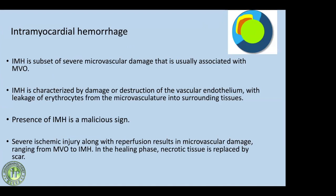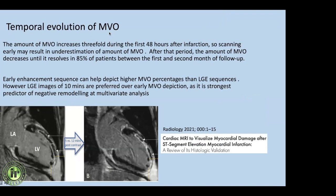The presence of IMH is a malicious sign — it leads to severe ischemic injury not only in the acute setting but even in the healing phase, where necrotic tissue is replaced by a larger scar with poor outcome. Simple MVO will reduce in size over time. When differentiating thrombus from MVO, delayed images help: MVO areas will fill in over time, and classically MVO is located within the bright LGE scar area — dark areas within bright scar represent microvascular obstruction.